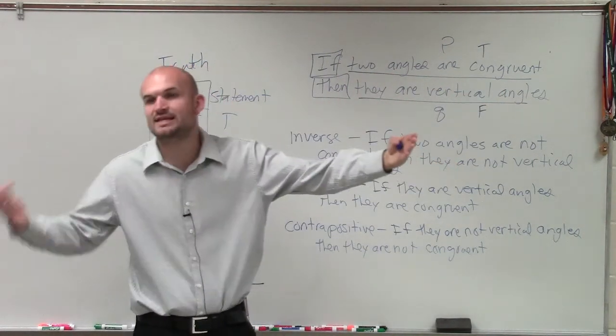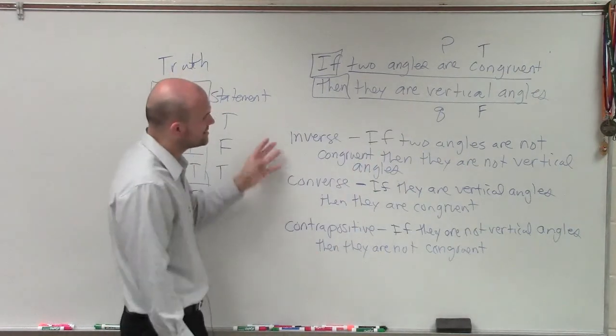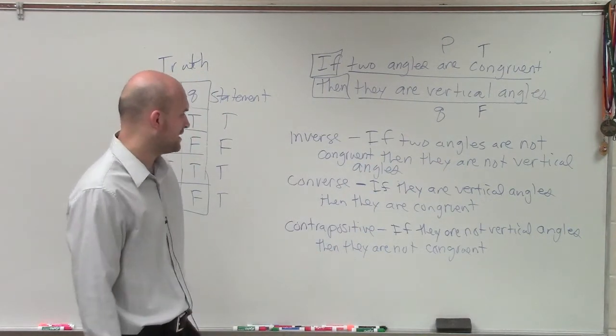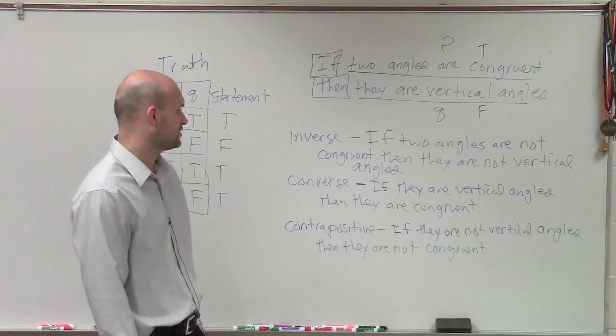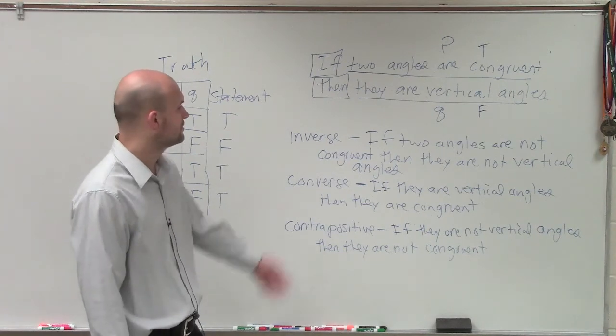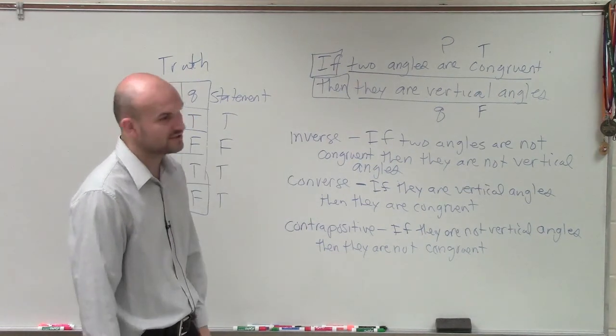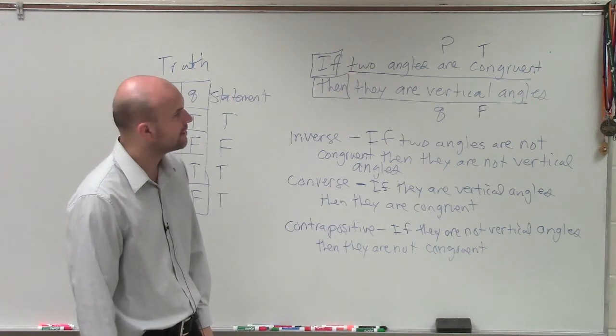If one is false, then we know that the other one is false. And you can see that these two, if they are not vertical angles, if they are vertical angles, then they are congruent, which we know is true, and therefore also the inverse is going to be true as well, okay?